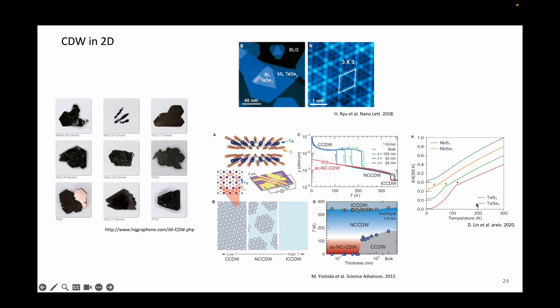In other archetypal charge density wave systems like 2H tantalum disulfide or tantalum diselenide or niobium diselenide, the charge density wave shows up as a kink in the R vs T measurements. We will discuss the experimental signatures of charge density waves in the next video.